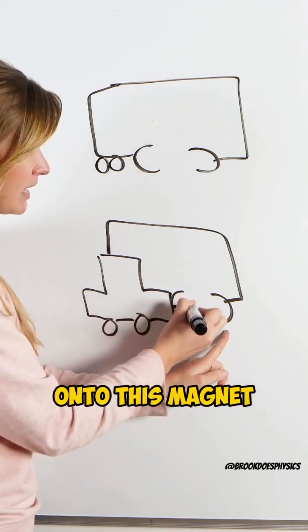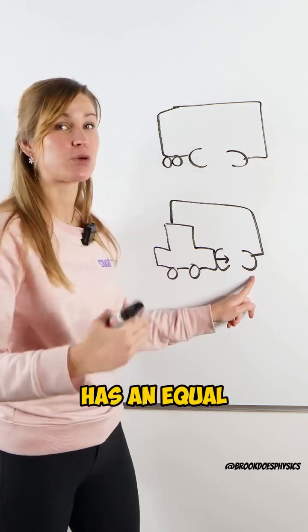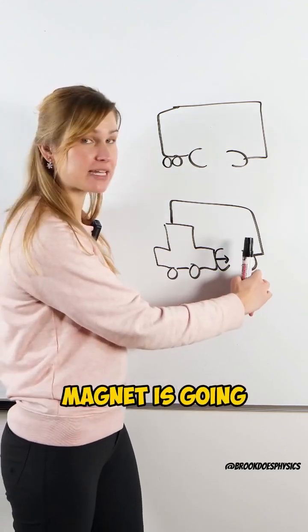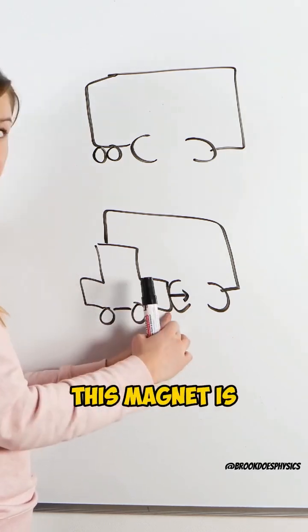Because of Newton's third law, we know that every action has an equal and opposite reaction. So if this magnet is going to have a force of attraction on this magnet, this magnet is going to have an equal but opposite force of attraction on that magnet.